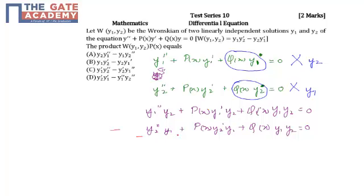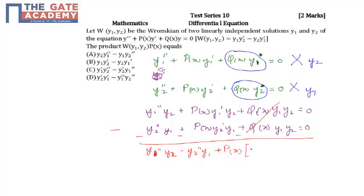So now if we subtract the second equation from the first, the q(x)·y1·y2 terms cancel. What we are left with is: y1'' · y2 - y2'' · y1, plus p(x) times the bracket y1'·y2 - y2'·y1, equal to 0.